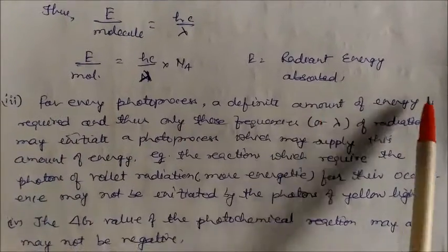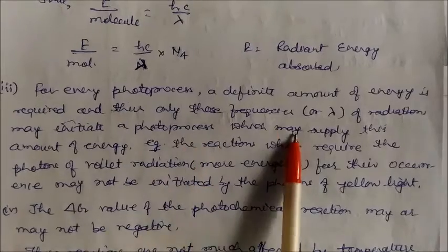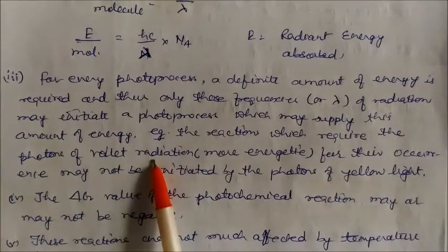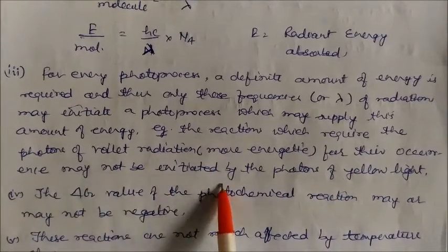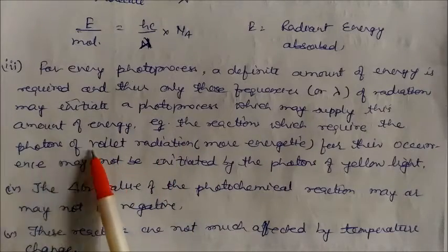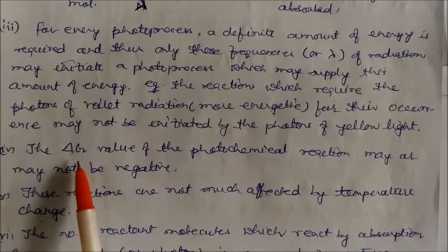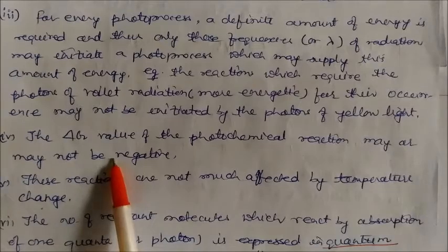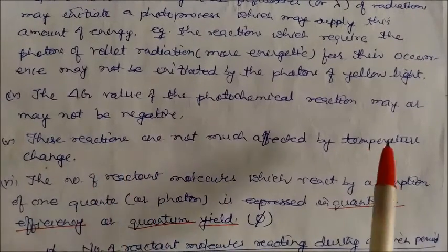Third characteristic: for every photo process, a definite amount of energy is required. Only those frequencies of radiation may initiate a photo process which can supply this energy. For example, a reaction requiring photons of violet radiation will not be initiated by photons of yellow light, since yellow light is less energetic. Also, the delta G value of a photochemical process may or may not be negative.